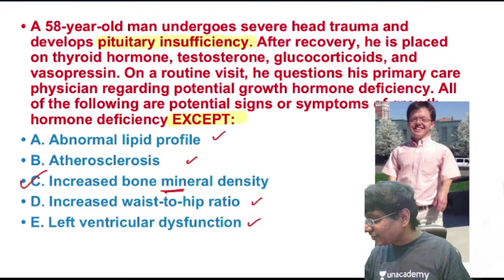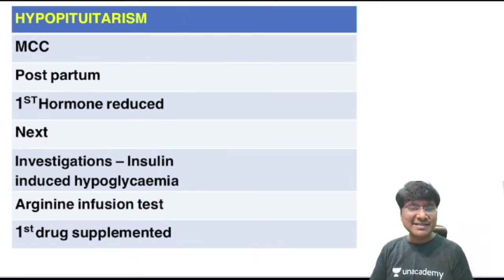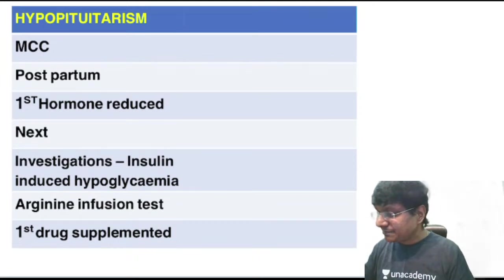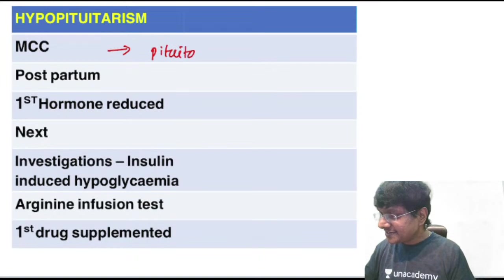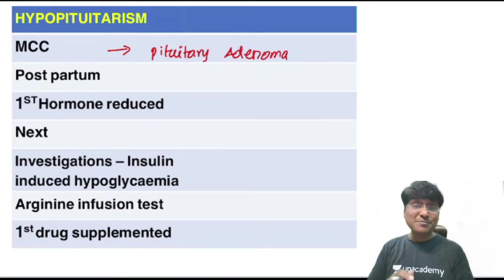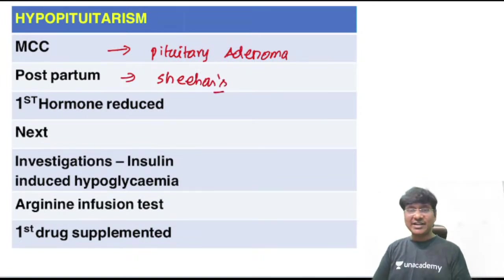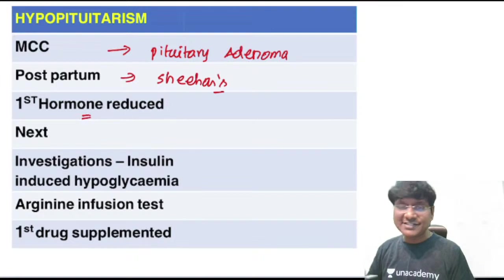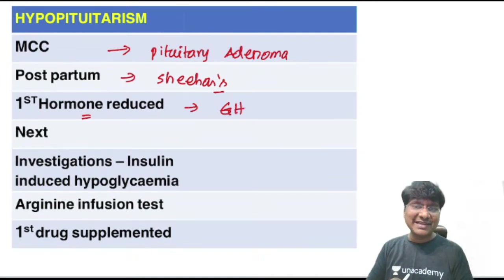Quick recap of hypopituitarism: most common cause is pituitary adenoma. Postpartum hypopituitarism is called Sheehan syndrome. The first hormone reduced in hypopituitarism is growth hormone, followed by sex hormones FSH and LH.